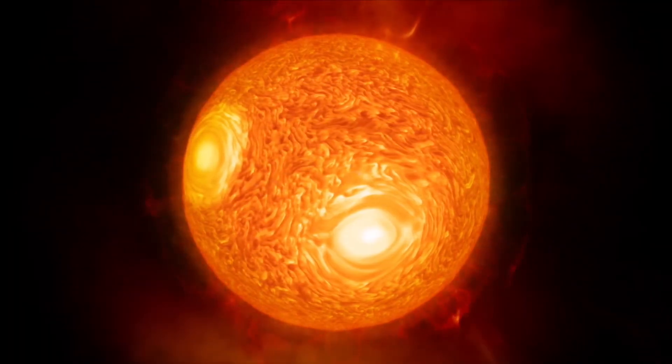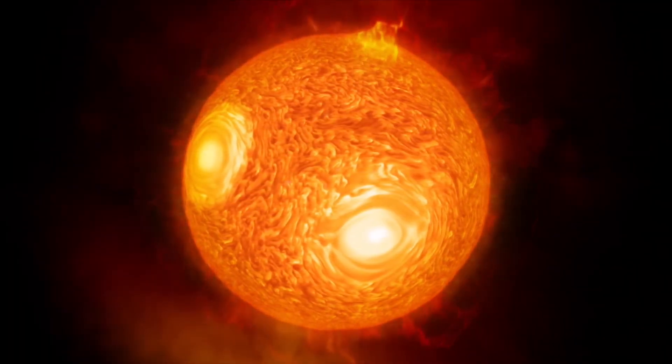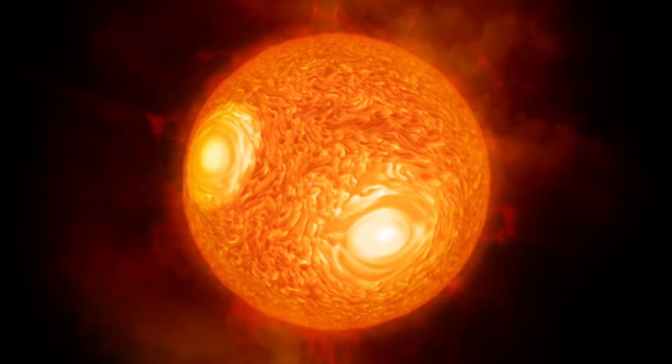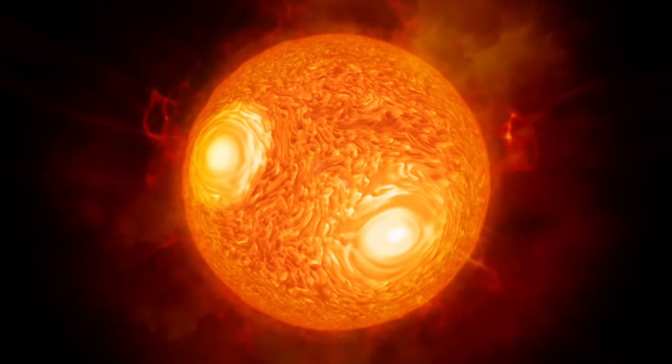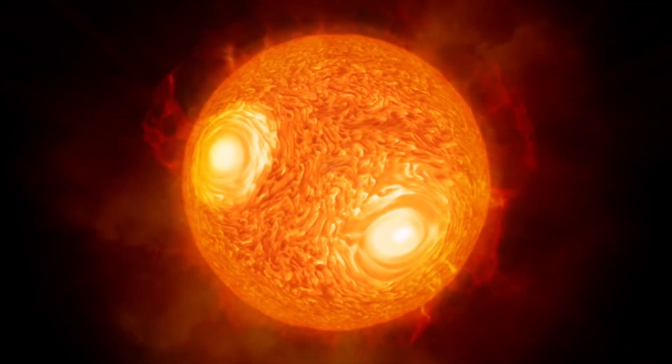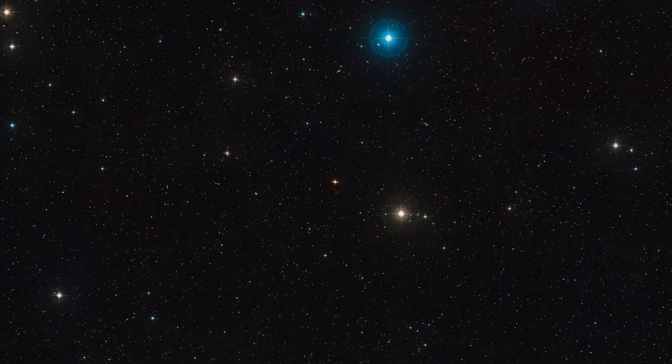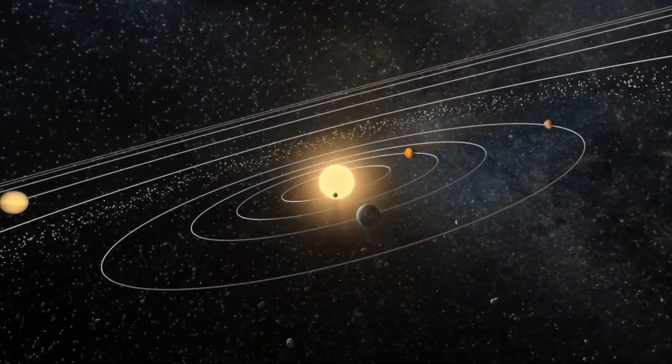This rise and fall, known as the solar cycle, is just one layer. Beneath it lies a longer 22-year magnetic cycle called the hail cycle, during which the sun's magnetic field flips and then flips back again. These patterns help scientists predict when the most explosive events are likely to happen.